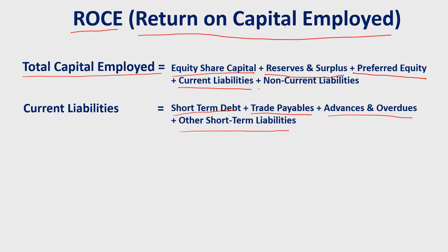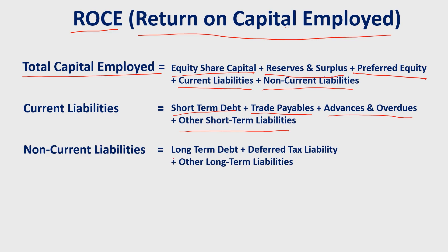Next, non-current liabilities — these are the company's long-term debt, such as loans of 5 years, 6 years, or any debt of 1 year and above. Long-term debt plus deferred tax liabilities and other long-term liabilities fall under non-current liabilities.